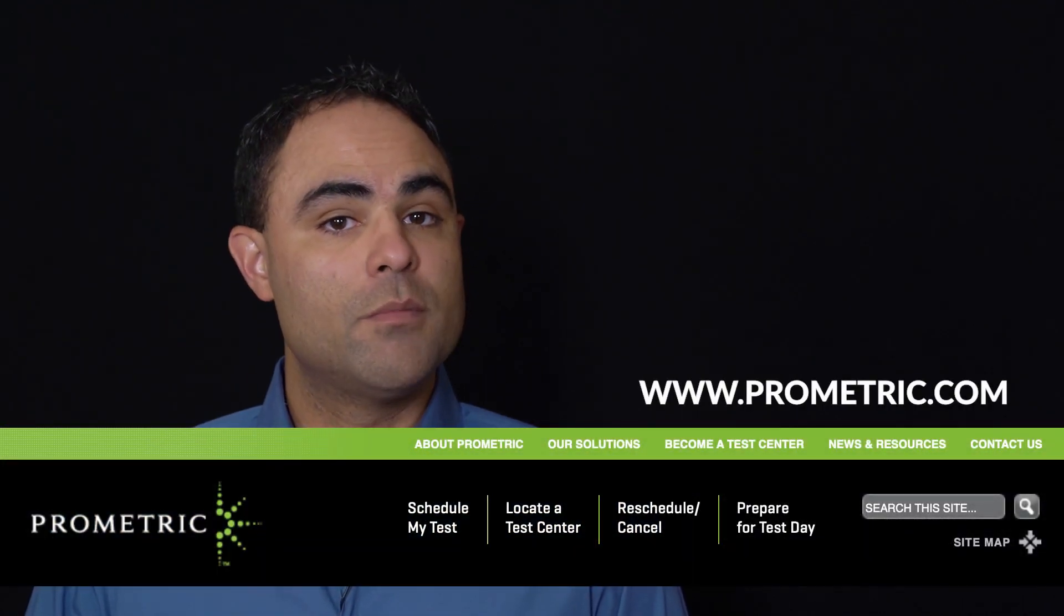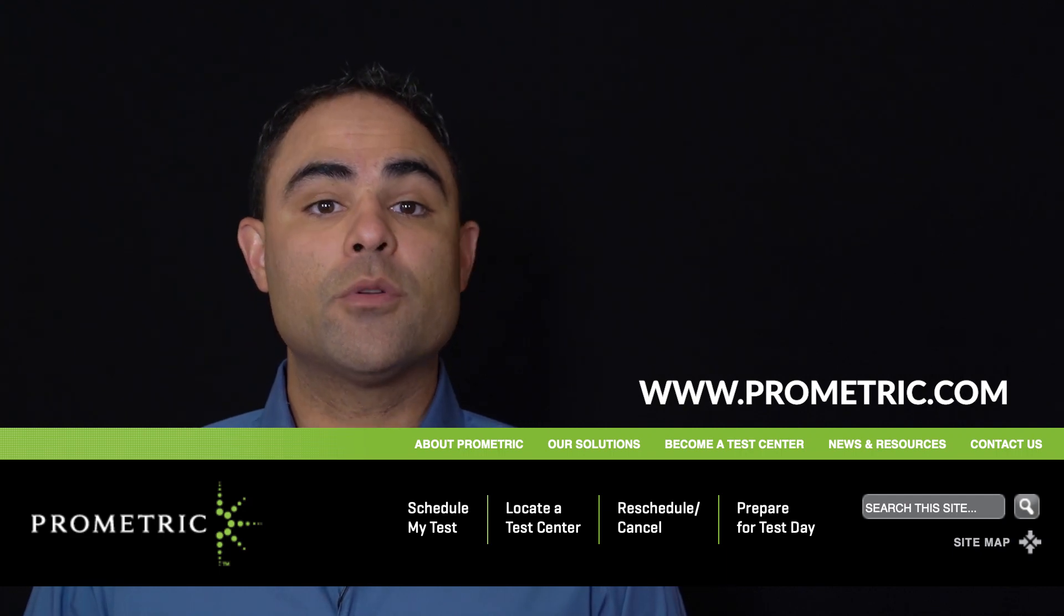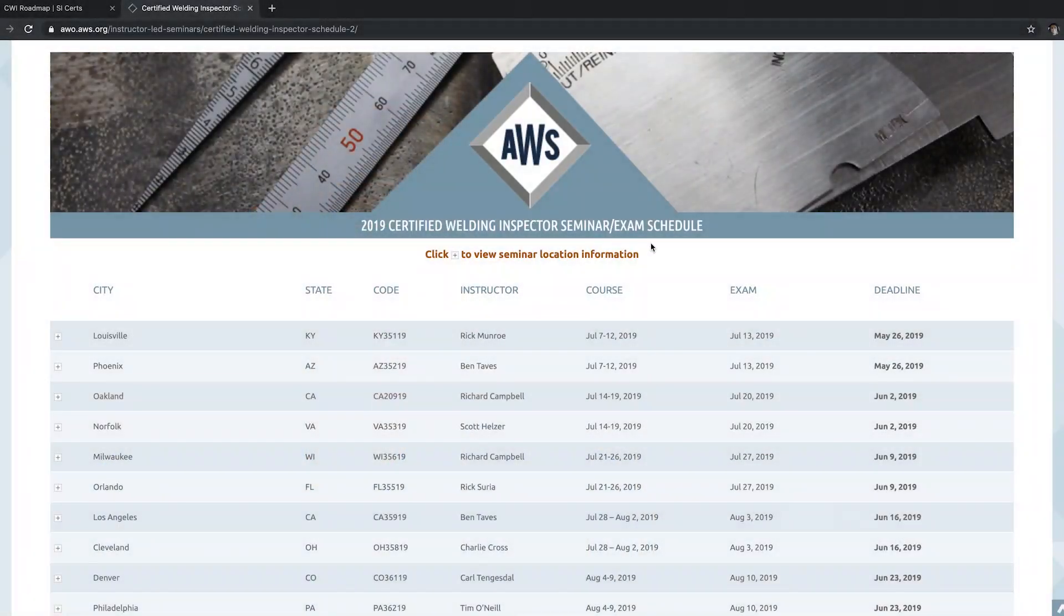Parts A and C are taken at a Prometric Test Center. But Part B is taken at a different location. Part B is given on the last day of the week-long AWS seminar.